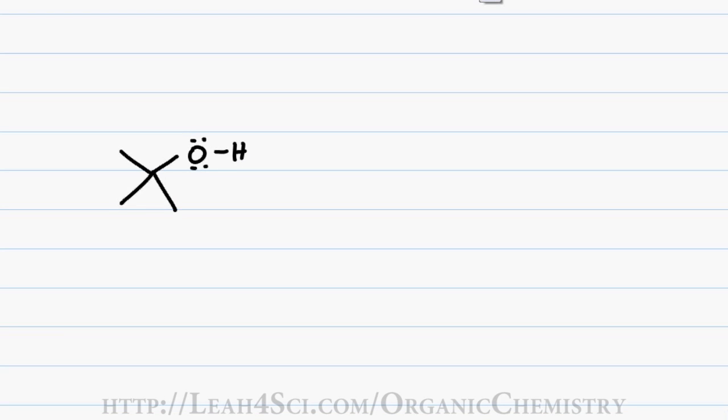When you have a substituent on your alcohol, you still follow the same rules where your substituent becomes the prefix and the alcohol is your suffix. You may recognize this molecule as having the common name tert-butyl alcohol but let's see how to name it using the IUPAC rules. We'll start by identifying and highlighting our longest carbon chain, in this case it's 3 carbons and numbering so that alcohol gets the lowest number.